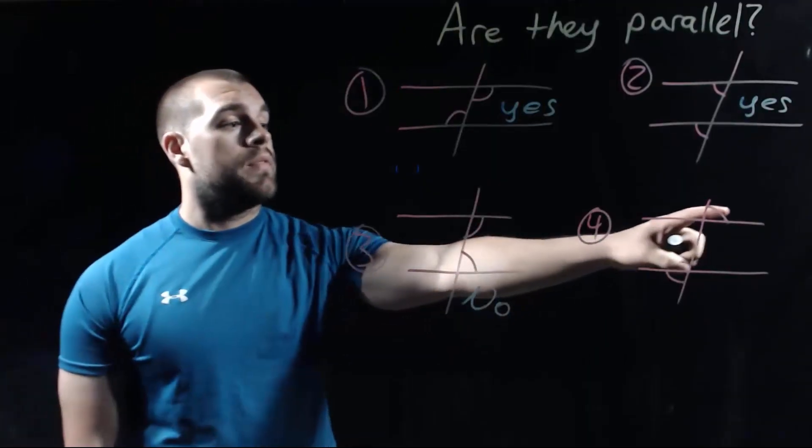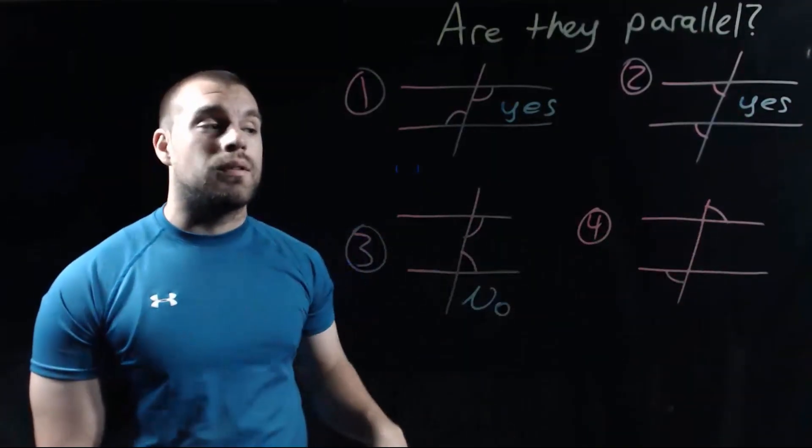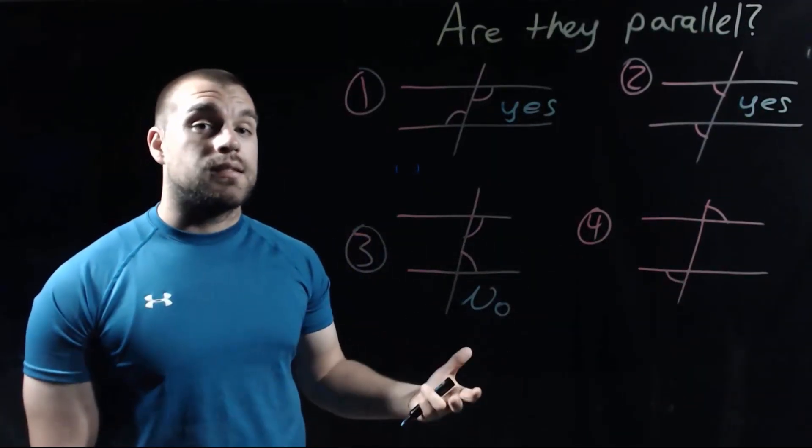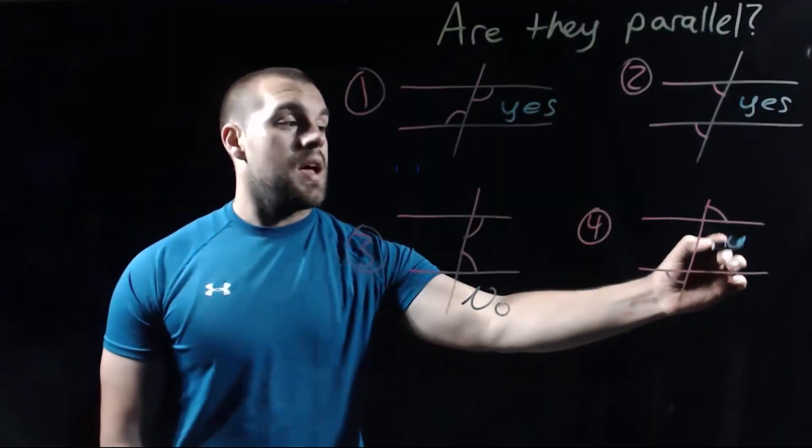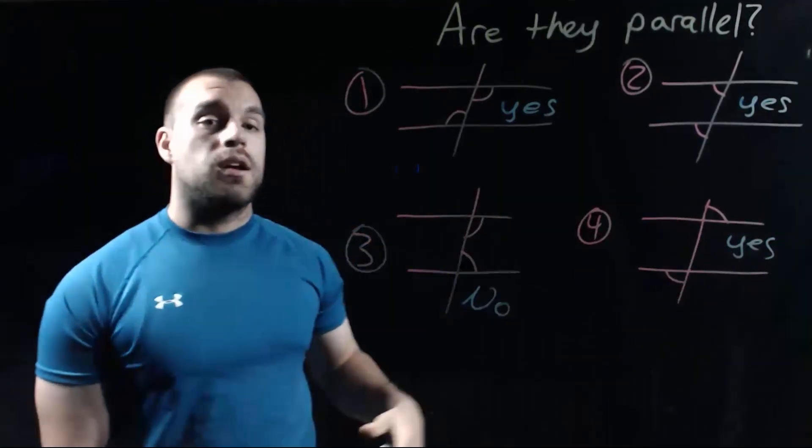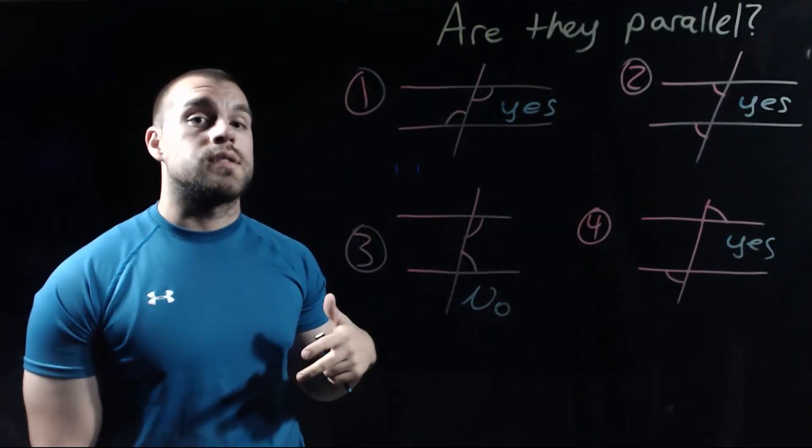Our last one, number four, we've got these two angles being congruent. These are alternate exterior angles. So I would say yes, these two lines are parallel because we have alternate exterior angles that are congruent.